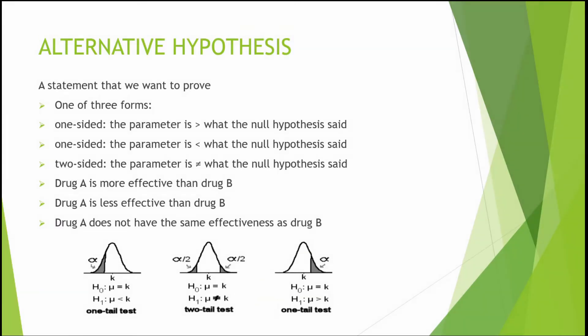Alternative hypothesis is opposite to the null hypothesis — it is a statement that we want to prove. It can take three forms: less than, greater than, or not equal to the null hypothesis. Continuing the same example: drug A is more effective than drug B; drug A is less effective than drug B; or drug A does not have the same effectiveness as drug B.